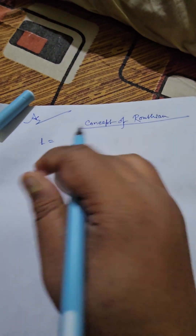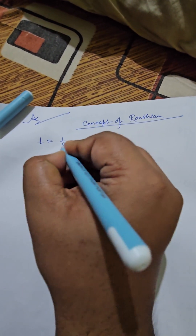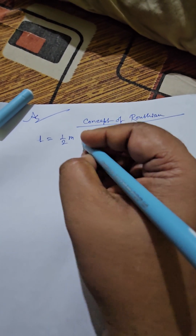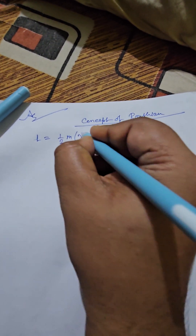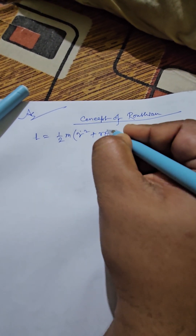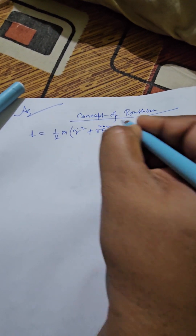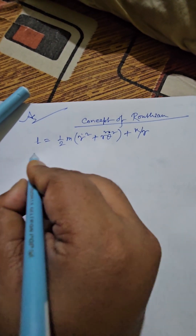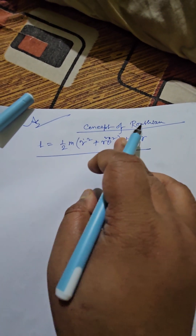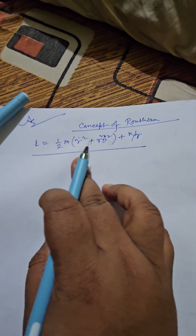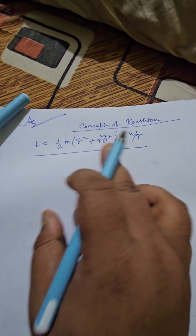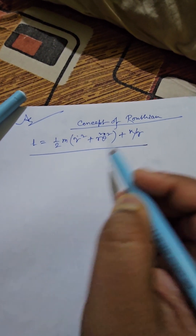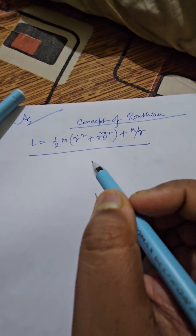The Lagrangian corresponding to Kepler's problem can be written as L = (1/2)m(r-dot squared + r squared theta-dot squared) + k/r, where k is the force constant and the particle is moving in a plane.